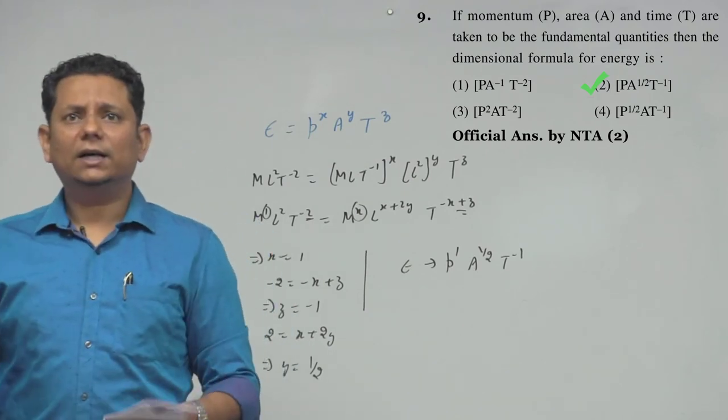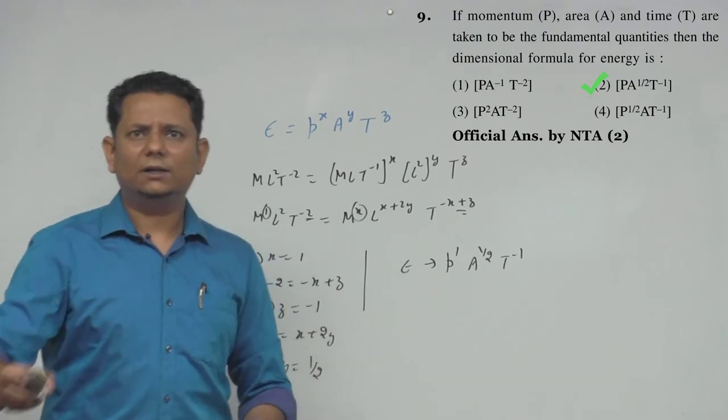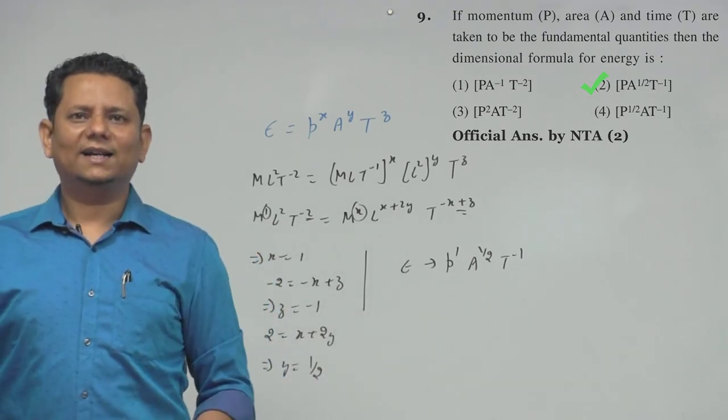So that would be our final answer. If we look at this, P to the power 1, A to the power half, T to the power minus 1, so that means option number 2 is the right answer.